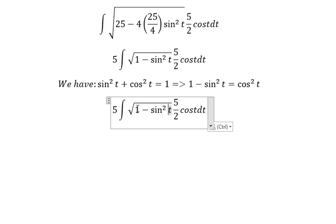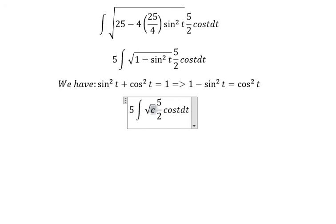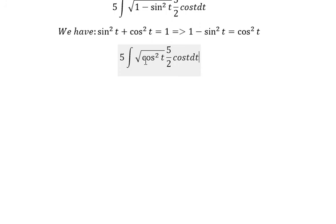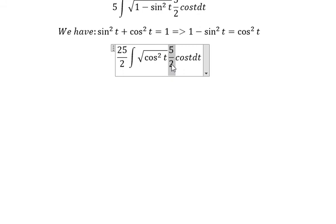We change this to cos²(t). 5 over 2 multiplied with 5 we got 25/2. The square root of cos²(t) you got cos(t).